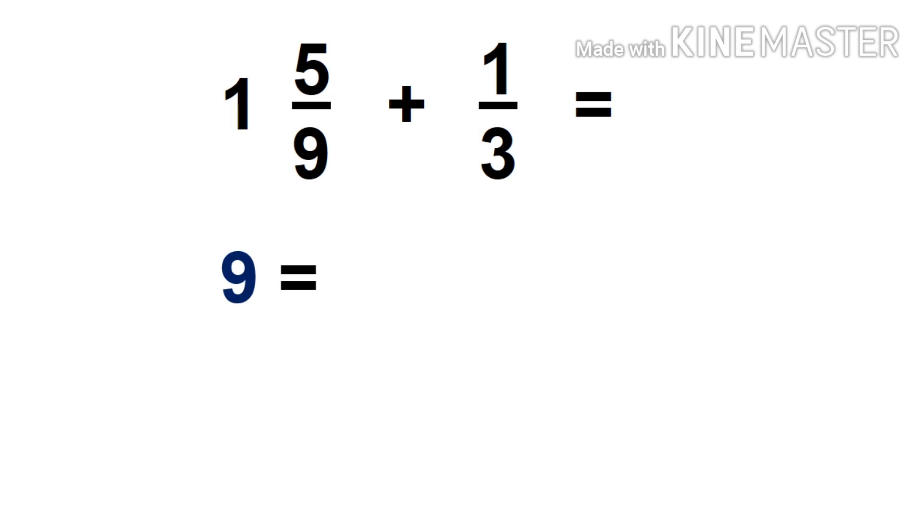List down our denominators, 9 and 3. For 9, the factors are 3 times 3. And for 3, we have 3 times 1.